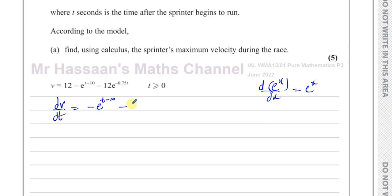Then this stays the same as well. You have 12e to the power of negative 0.75t. How does that differentiate? It stays the same. However, inside the function is negative 0.75t. If I differentiate that with respect to t, I'm going to get negative 0.75. So I have to multiply that by the differential what's inside the function.